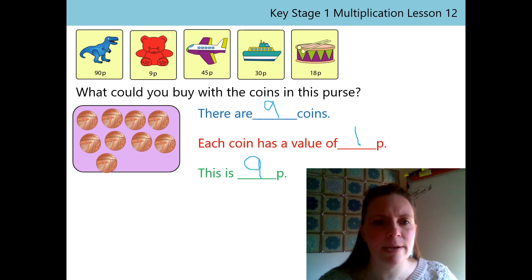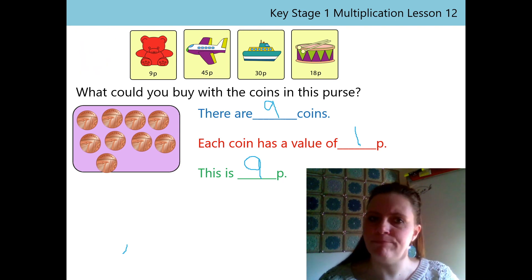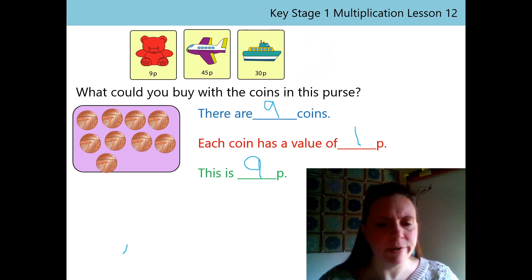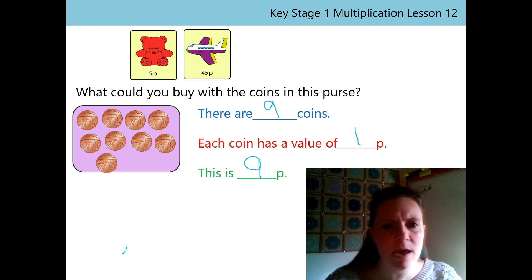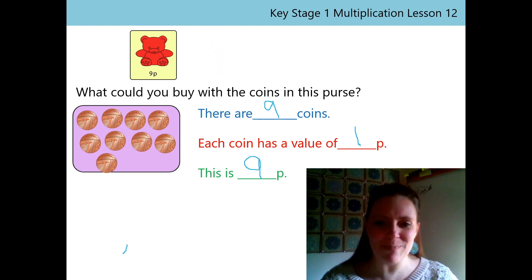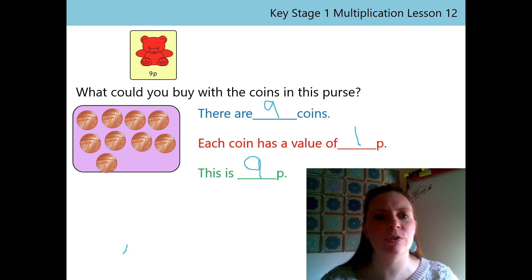So, I've got 9p. What could I buy with 9p? Can you help me? OK, you think I know what I can buy? Let's find out if we're right. Not the dinosaur. Not the drum. Not the boat. The bear or the aeroplane? Oh, it's the bear. With my 9p I can buy this teddy bear that costs 9p. Thanks for your help there.